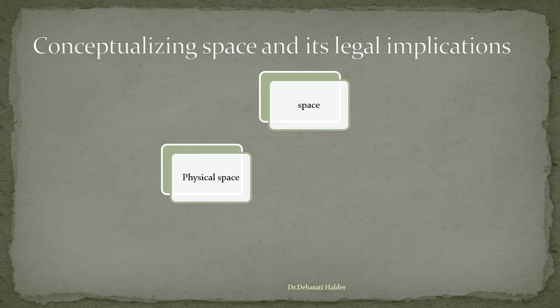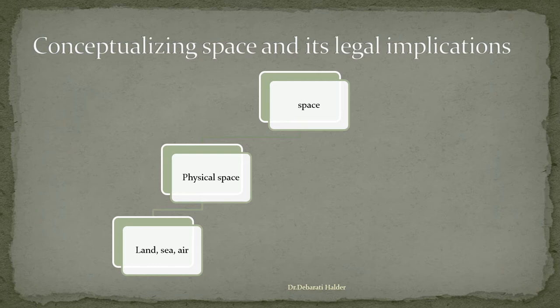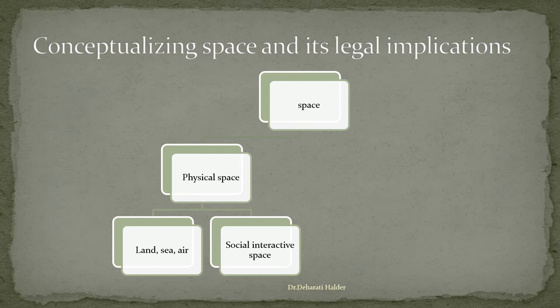There is physical space and from the physical space we can understand three types of physical space: land, sea and air. All these spaces can be and are governed by law. These laws can be civil or criminal law or even governed by international law also. Physical space — that is land, sea and air — can also be social interactive space, where people can exchange ideas, and exchange tangible and intangible property.